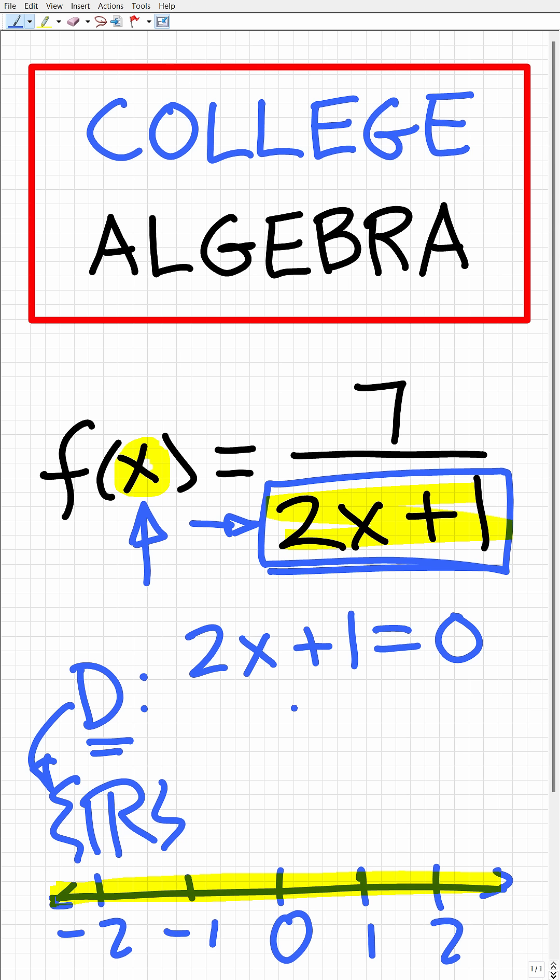Well, all we have to do is solve for x. So this is going to be 2x = -1, or x = -1/2.